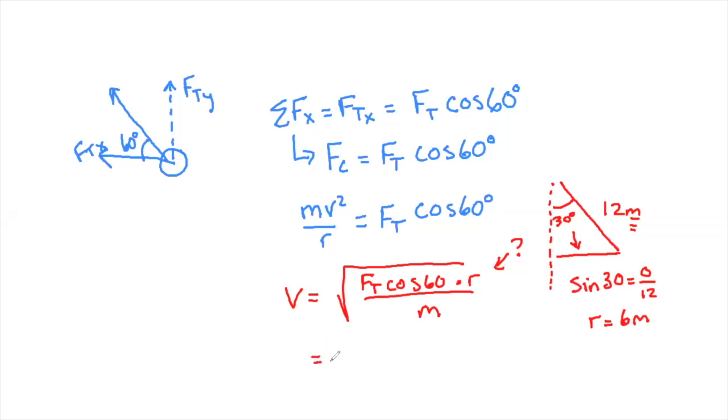So I sub everything in, I have 866 newtons times the cosine of 60 degrees times 6 meters divided by my M, 75 kilograms. And I find out that the speed that this object is traveling around the circle is 5.89 meters per second.